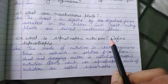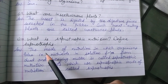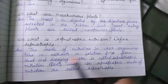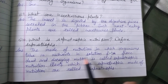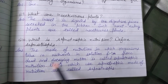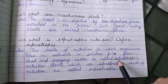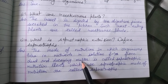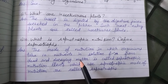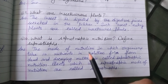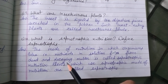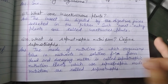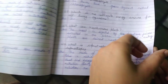Saprotrophic nutrition kya hoti hai? Or saprotroph kaun sa hota hai? The mode of nutrition in which organisms take nutrients in solution from dead and decaying matter. Jo organism dead matter se apna food lete hain, usse hum saprotrophic nutrition bolte hain, aur aisi organisms ko saprotrophs kehte hain.